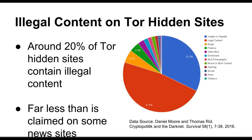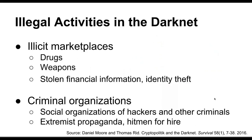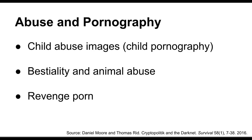The types of illegal activities found on the dark net can be classified into a few categories. Illicit marketplaces were extremely common — people selling especially drugs, which are probably the most common, followed by stolen financial information and identity theft. There was also some illegal trafficking in weapons, criminal organizations using the dark net including social organizations of hackers and other criminals, and folks peddling extremist propaganda or offering hitmen for hire.